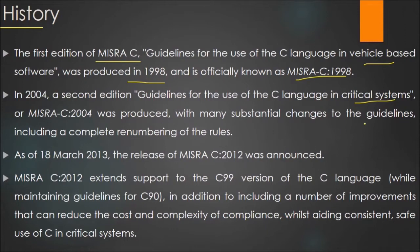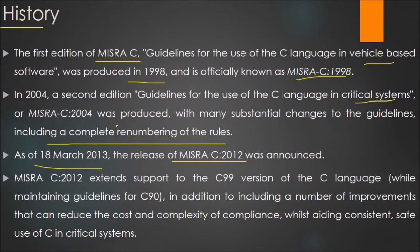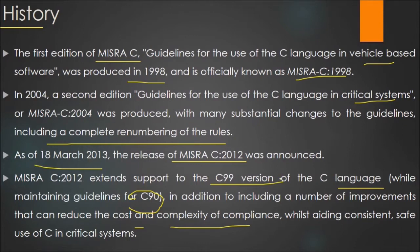The 2004 edition included many substantial changes to the guidelines, including a complete renumbering of the rules. As of 18 March 2013, the release of MISRA-C 2012 was announced. MISRA-C 2012 extends support to the C99 version of the C language while maintaining guidelines for C90, and includes improvements to reduce cost and complexity of compliance while adding consistent safe use of C in critical systems.